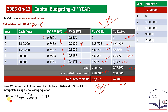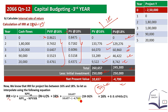Using the IRR interpolation formula: IRR = Lower Rate + [NPV at Lower Rate ÷ (NPV at Lower Rate − NPV at Higher Rate)] × (Higher Rate − Lower Rate). With lower rate = 16% and higher rate = 18%, the answer works out to approximately 17.38%.